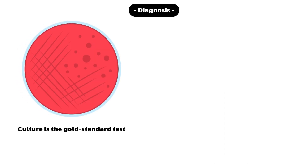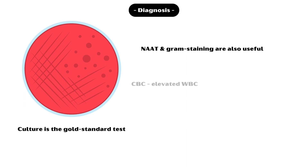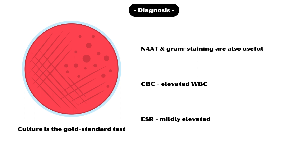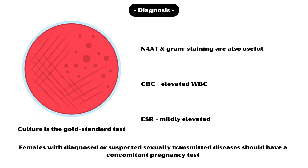Culture is the gold standard test in diagnosing gonorrhea. Nucleic acid amplification tests and gram staining are also useful. Complete blood count will show elevated white blood cells, especially with disseminated infection. ESR is mildly elevated. Females with diagnosed or suspected sexually transmitted diseases should have a concomitant pregnancy test.